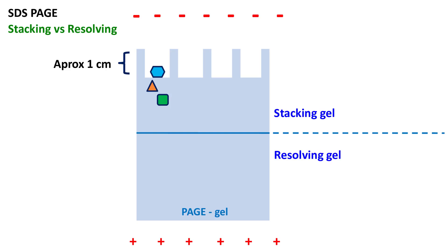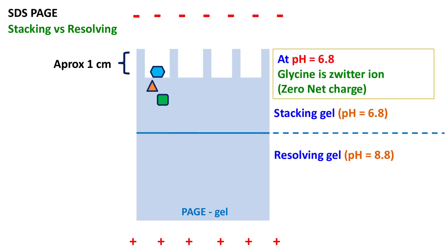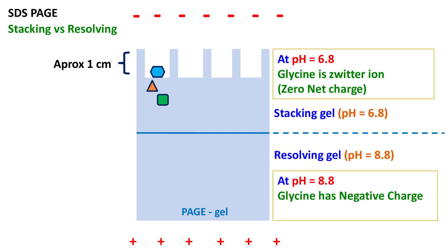The stacking gel has a pH of 6.8, whereas the resolving gel has a pH of 8.8. Both these pH values are very important. At pH 6.8, glycine becomes a zwitterion, meaning it has net zero charge. At pH 8.8, glycine has a negative charge.